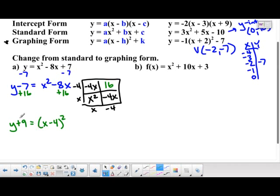Then finally, to have it just so it's y equals, we subtract 9 on both sides. I'm going to subtract 9, and we wind up with y equals x minus 4 in parentheses squared minus 9. So immediately, what we know is the vertex is at 4, negative 9, and we're in business.